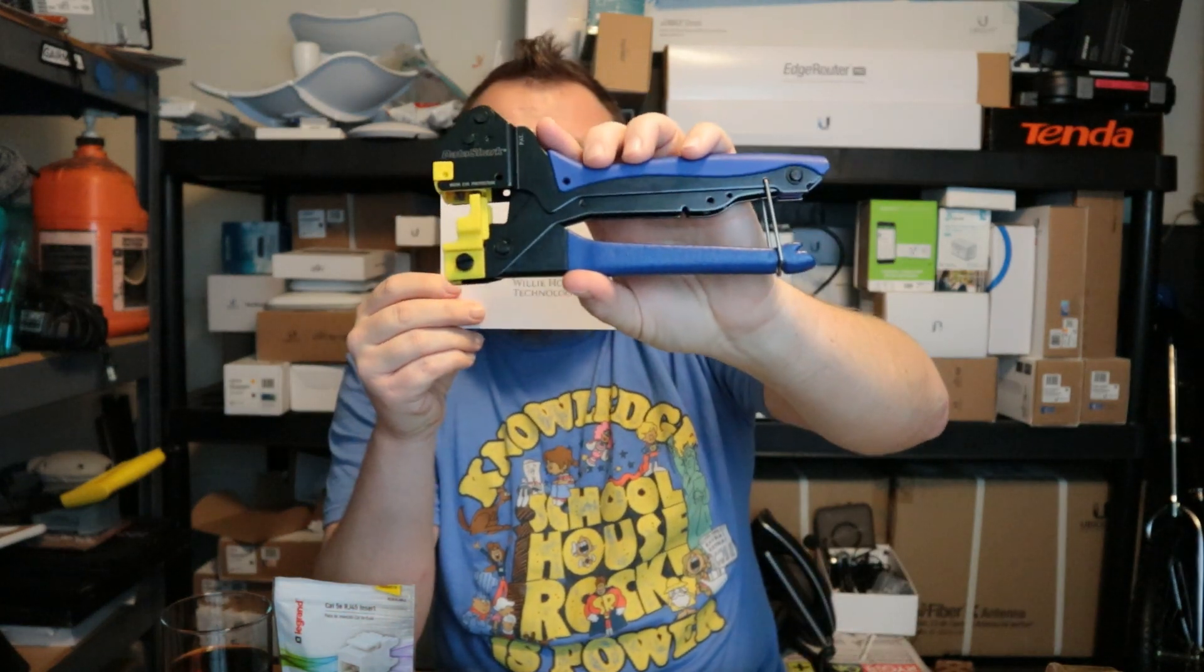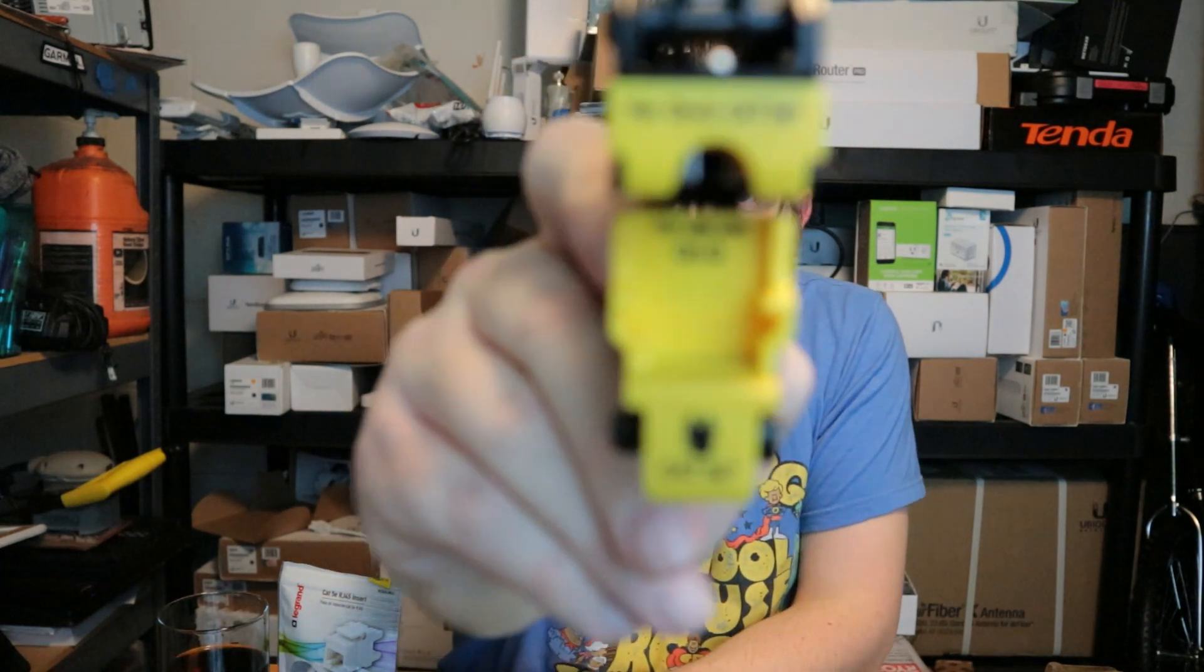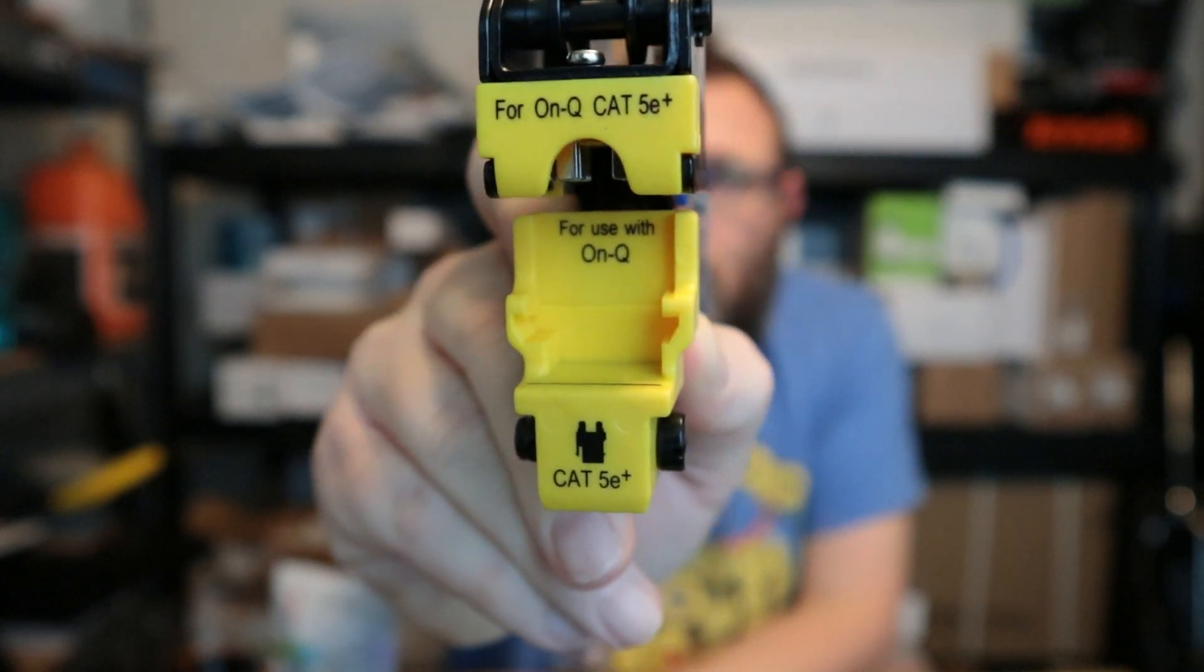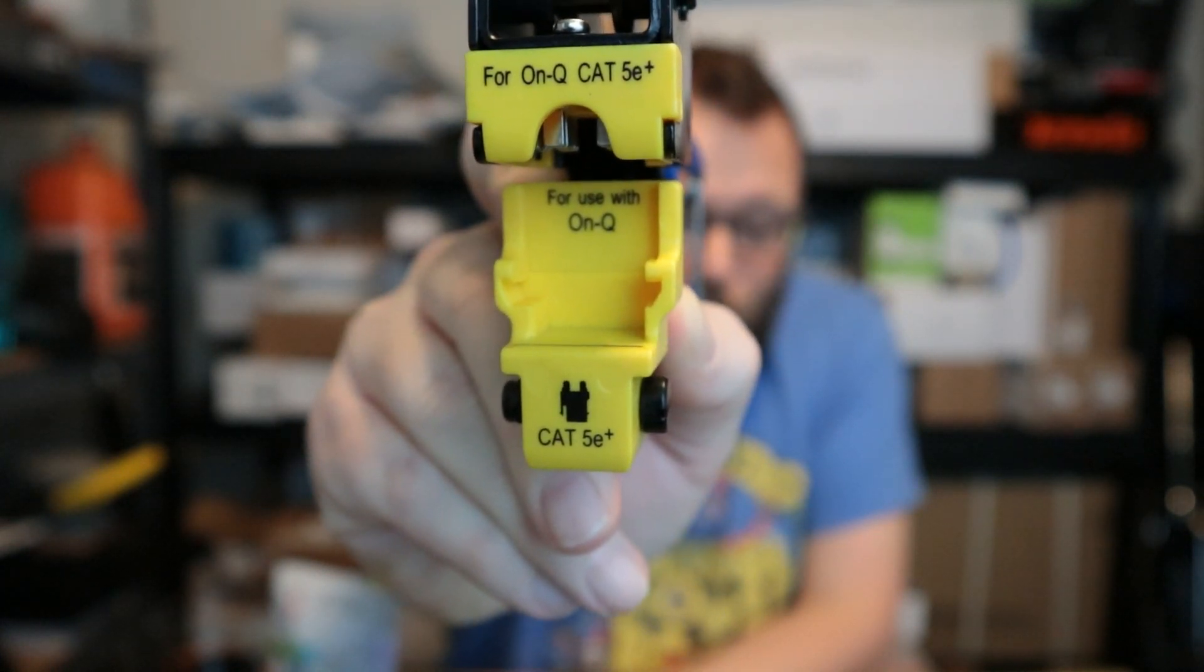This is the Data Shark keystone jack termination tool. This particular rig is set up for Cat 5e. You can get it in Cat 6 and you can actually see there are screws in there so you can replace this tool in here and go with Cat 6, whatever else they happen to have. I am using the Legrand Cat 5e.